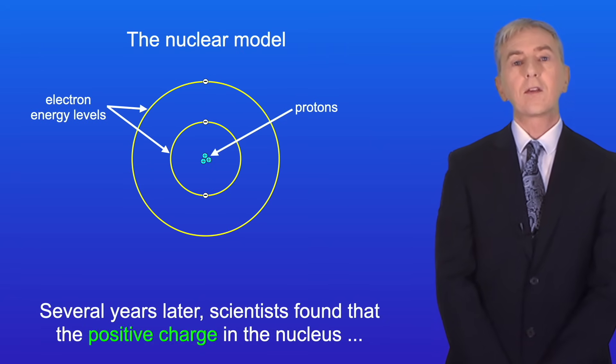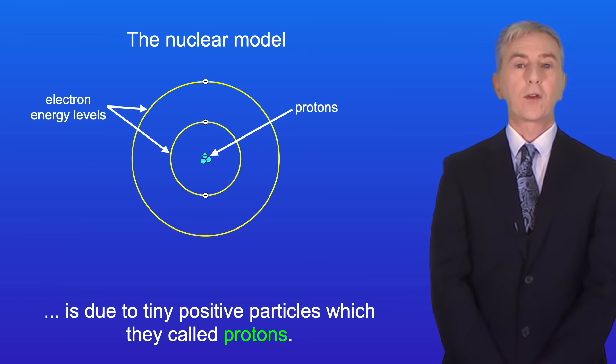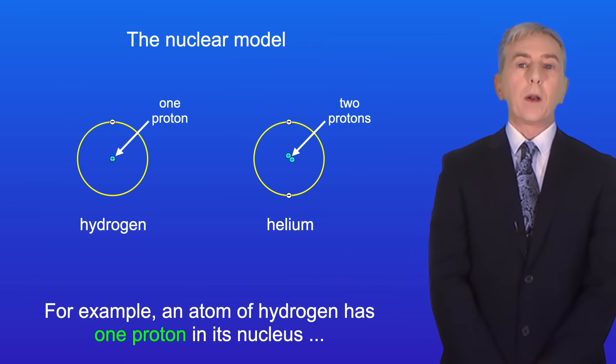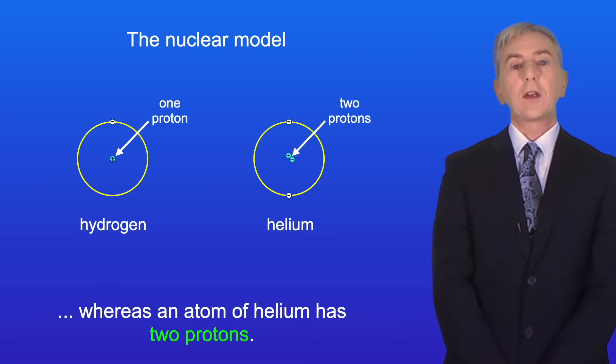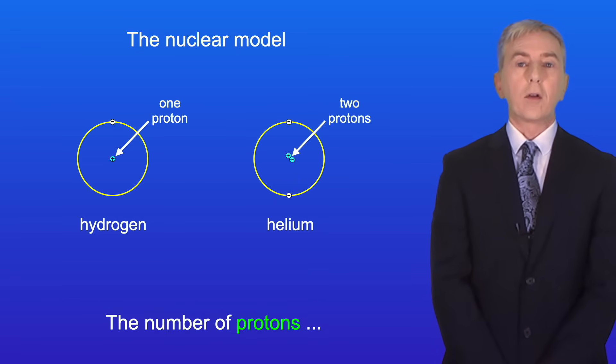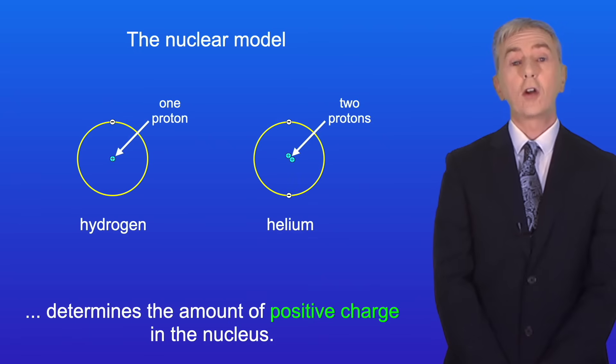Several years later scientists found that the positive charge in the nucleus is due to tiny positive particles which they called protons. For example an atom of hydrogen has one proton in its nucleus whereas an atom of helium has two protons. The number of protons determines the amount of positive charge in the nucleus.